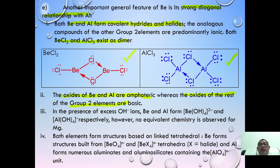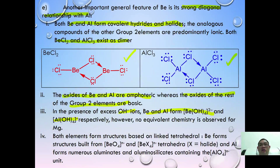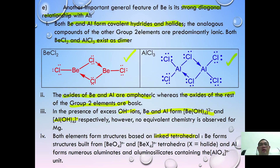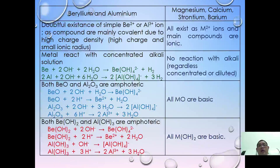Both beryllium oxide and aluminium oxide are amphoteric, whereas the oxides of the rest of group 2 are basic. In the presence of hydroxide ions, beryllium and aluminium can form [Be(OH)₄]²⁻ and [Al(OH)₄]⁻ respectively; no equivalent chemistry is observed for other group 2 compounds. Both elements also form structures based on linked tetrahedra.